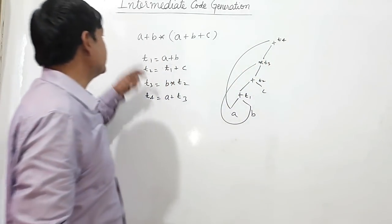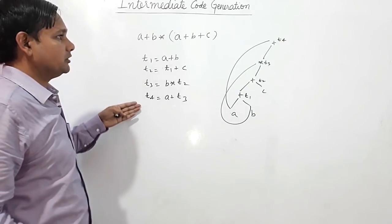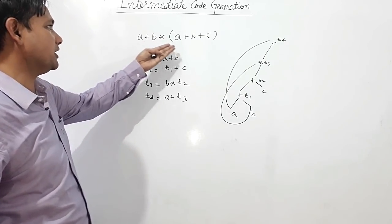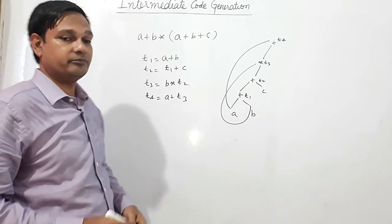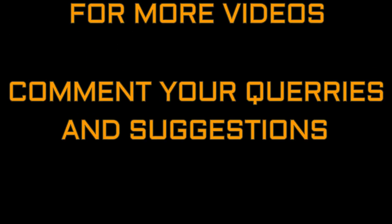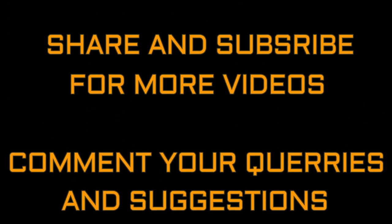So this is the directed acyclic graph for a plus b star a plus b plus c. This is t4. Thank you.